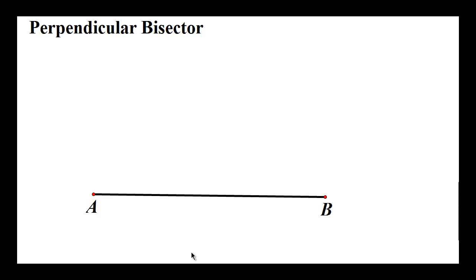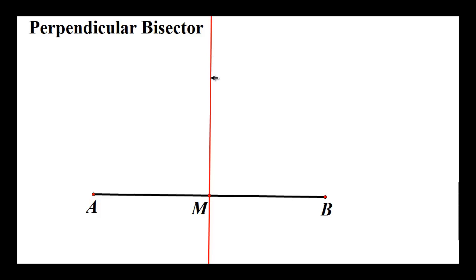We're going to talk about something called a perpendicular bisector, which we've covered before so it shouldn't be too foreign. A perpendicular bisector occurs when you have a segment and you find the midpoint of it — that's the 'bisect' part — and then you draw a perpendicular line, segment, or ray that goes through that midpoint.